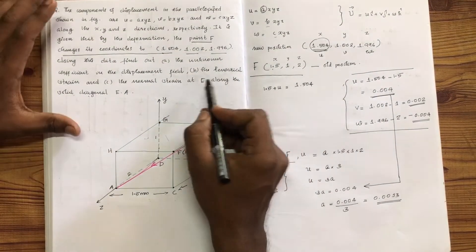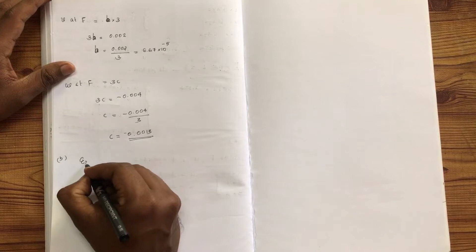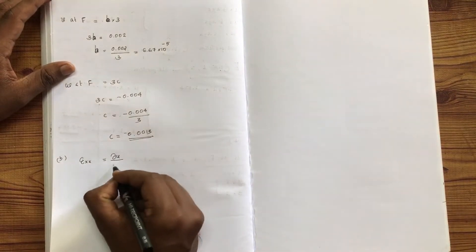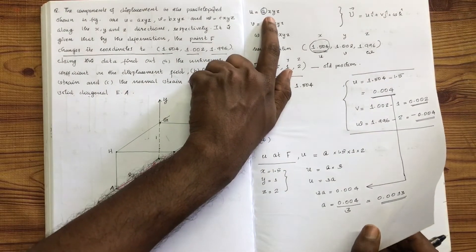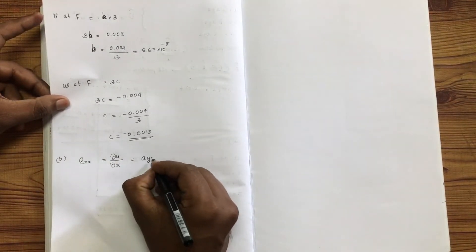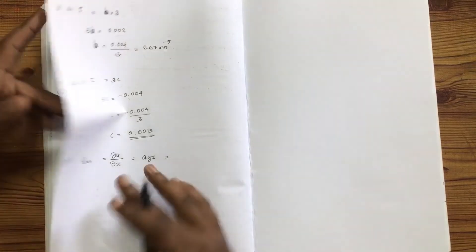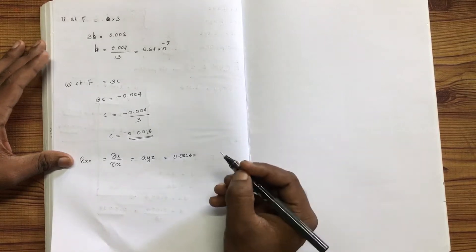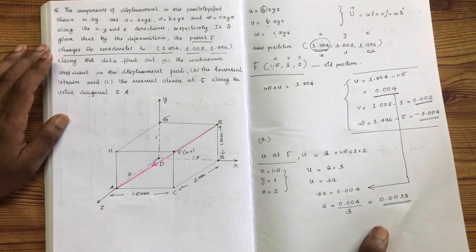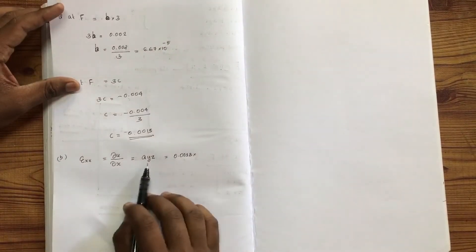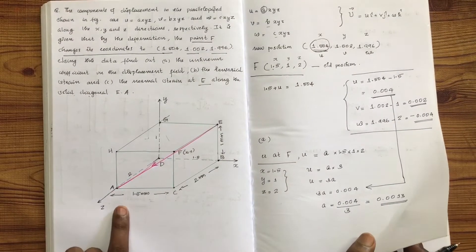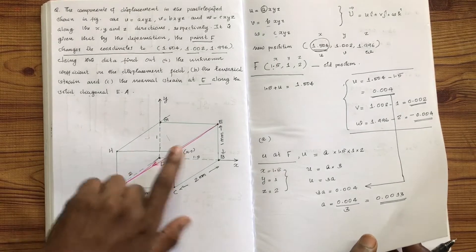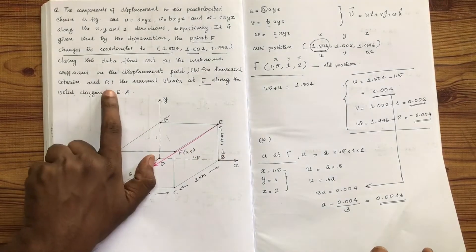We now have the unknown coefficients A, B, and C in the displacement field. Next, we find the tensorial strain. First, epsilon_xx = ∂u/∂x = ∂(A·xyz)/∂x = A·yz. Similarly for other components at point F.